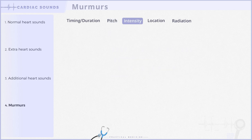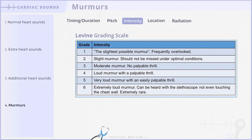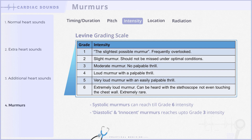Let's move on to discussing murmur intensity. According to the Levin grading system, murmur intensity is categorized into six grades, ranging from grade 1 to grade 6. Grade 1 indicates a very faint murmur, only detectable through careful auscultation in a quiet environment, whereas grade 6 signifies the loudest murmur, audible even when the stethoscope is slightly lifted off the chest. Systolic murmurs can reach up to grade 6 intensity, while diastolic murmurs typically do not exceed grade 3. Innocent or flow murmurs also fall below grade 3 in intensity.